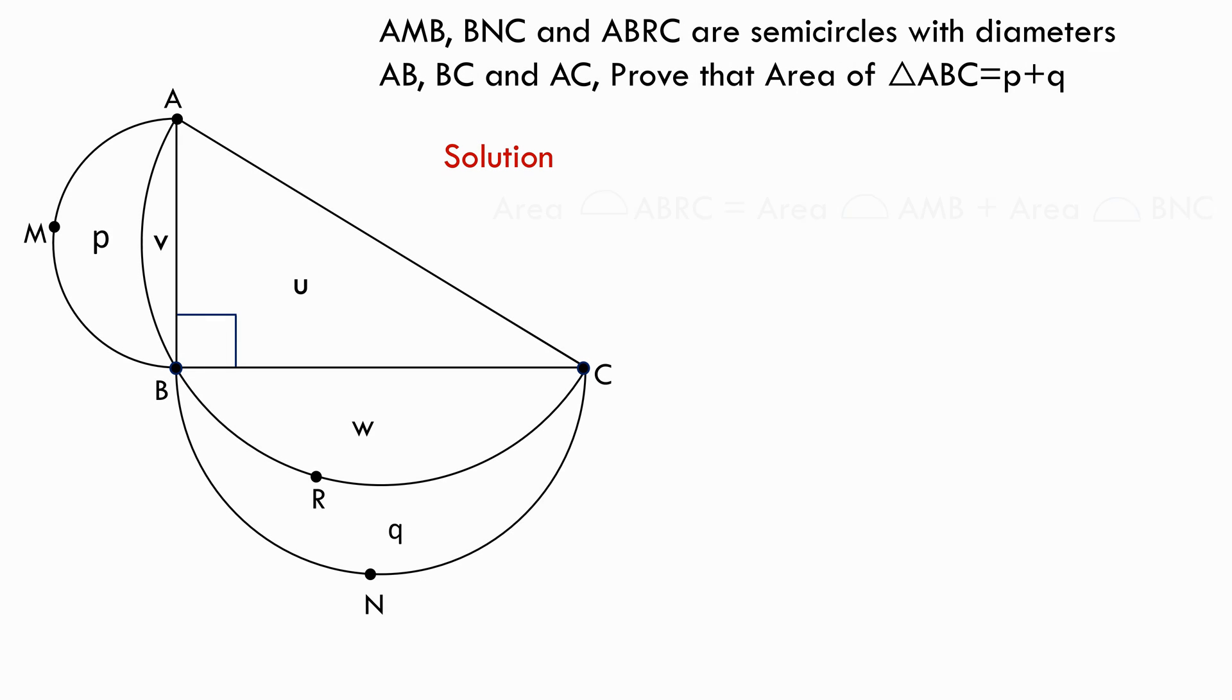Area of semicircle ABRC can be represented as a sum of u, v, and w. Similarly, area of semicircle AMB can be represented as the sum of p and v, and area of semicircle BNC can be represented as the sum of q and w.